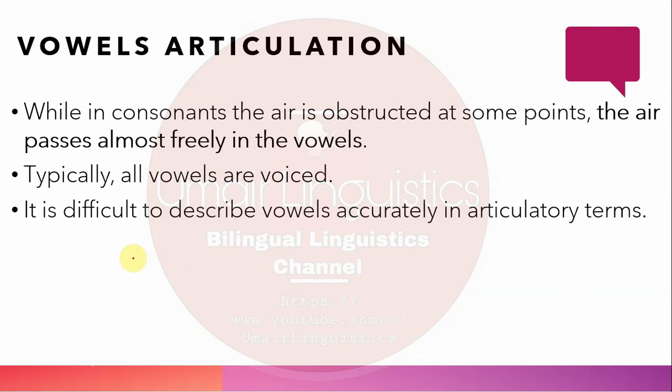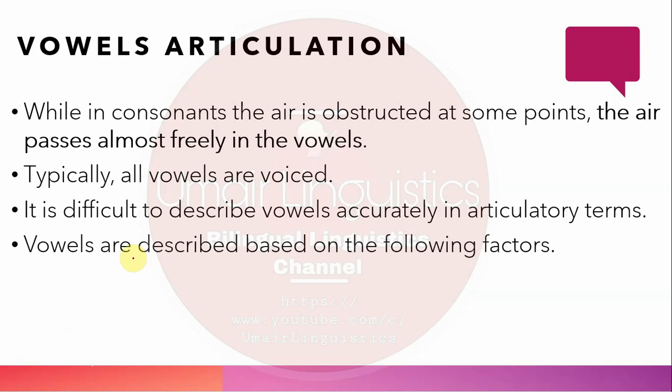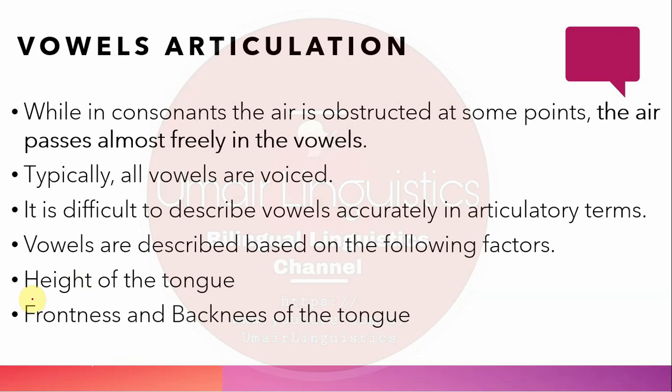It is difficult to describe vowels purely in articulatory terms, and we can describe them more accurately in terms of their acoustics. Vowels are usually described based on the following factors: the height of the tongue — whether it is moving upward or downward, close to the palate or close to the lower teeth — and the frontness or backness of the tongue, since in some vowels the tongue moves forward and in some it moves backward.